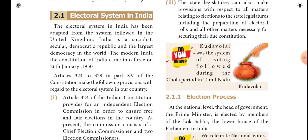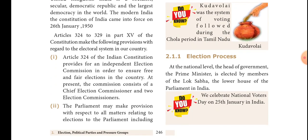Regarding the election process at the national level, the head of government — the prime minister — is elected by members of the Lok Sabha, the lower house of parliament in India. The central government is headquartered in New Delhi. The prime minister is head of government and is elected by members of the Lok Sabha. The Lok Sabha election is called a direct election.